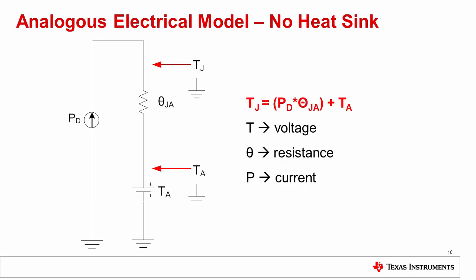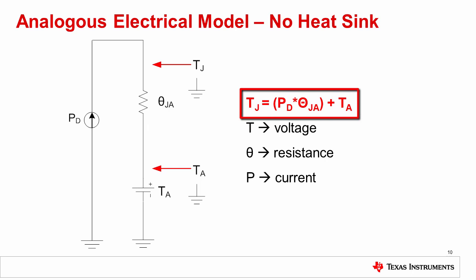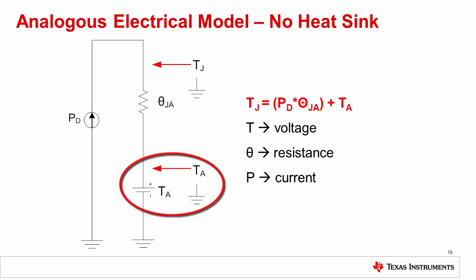The thermal model for an amplifier without a heat sink has an analogous electrical model, which we can use to calculate junction temperature, Tj. In this model, temperature acts as a voltage, thermal resistance acts as an electrical resistance, and power dissipation acts as a current source. Knowing this, we can calculate the junction temperature, Tj, like a voltage, with the equation: Tj equals PD times theta JA plus TA, where PD is the total power dissipation, theta JA is the amplifier junction to ambient thermal resistance, and TA is the ambient temperature.